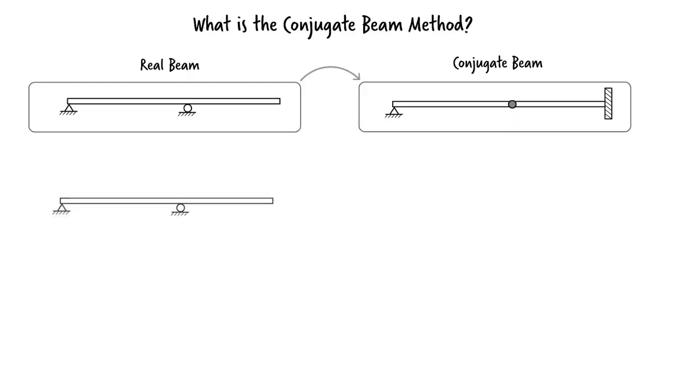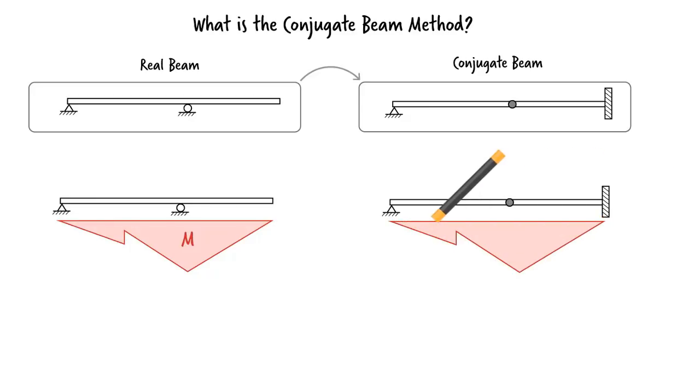We then draw the moment diagram for the real beam. Divide the moment values by EI. Then place the M over EI diagram as a distributed load on the conjugate beam.